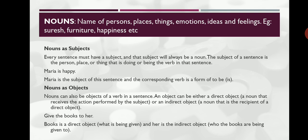Nouns appear as subjects as well as objects, or subject and object complements in sentences. Every sentence must have a subject, and the subject will always be a noun — most probably a noun, though the subject can also be a pronoun. The subject of a sentence is a person, place, or thing that is doing or being the verb. For example, 'Maria is happy' — Maria is the subject and the corresponding verb is 'is'.